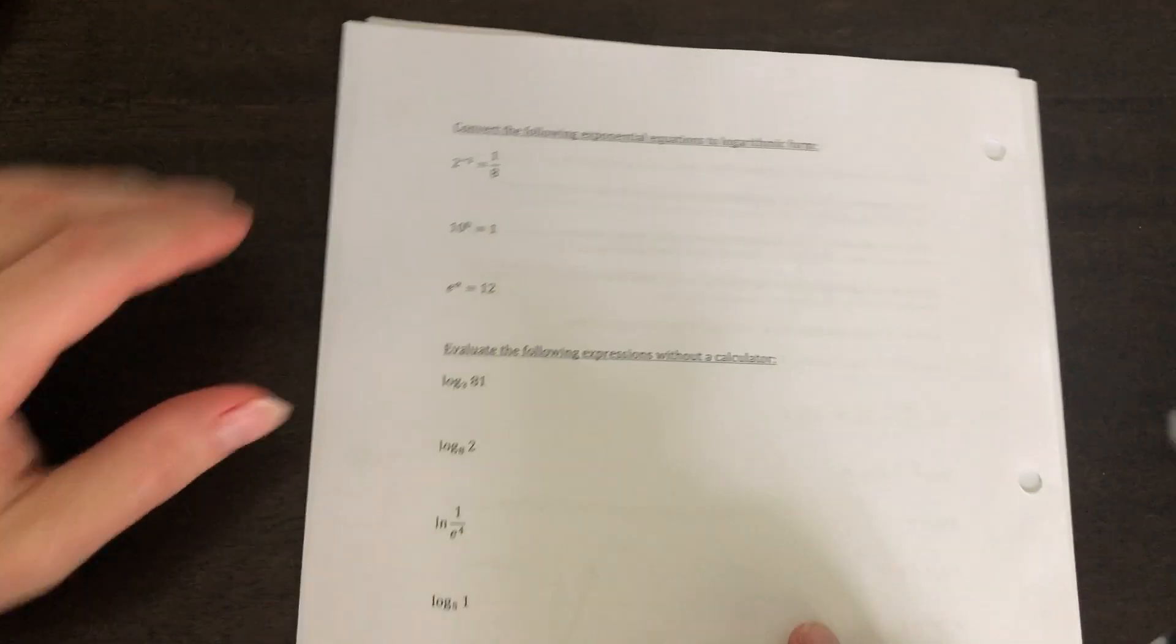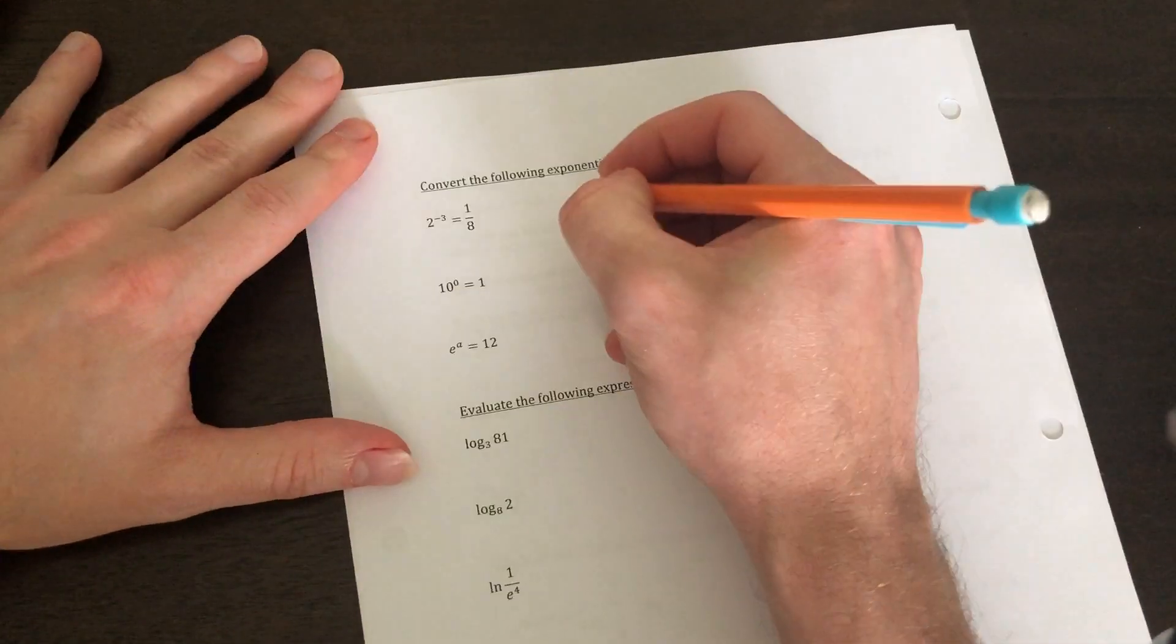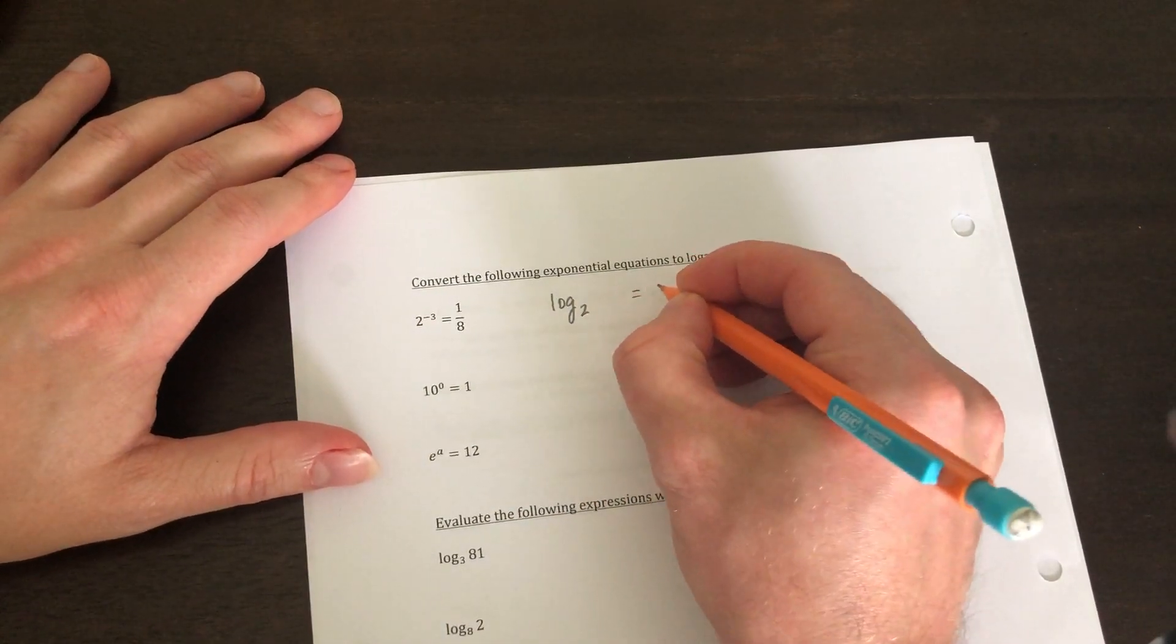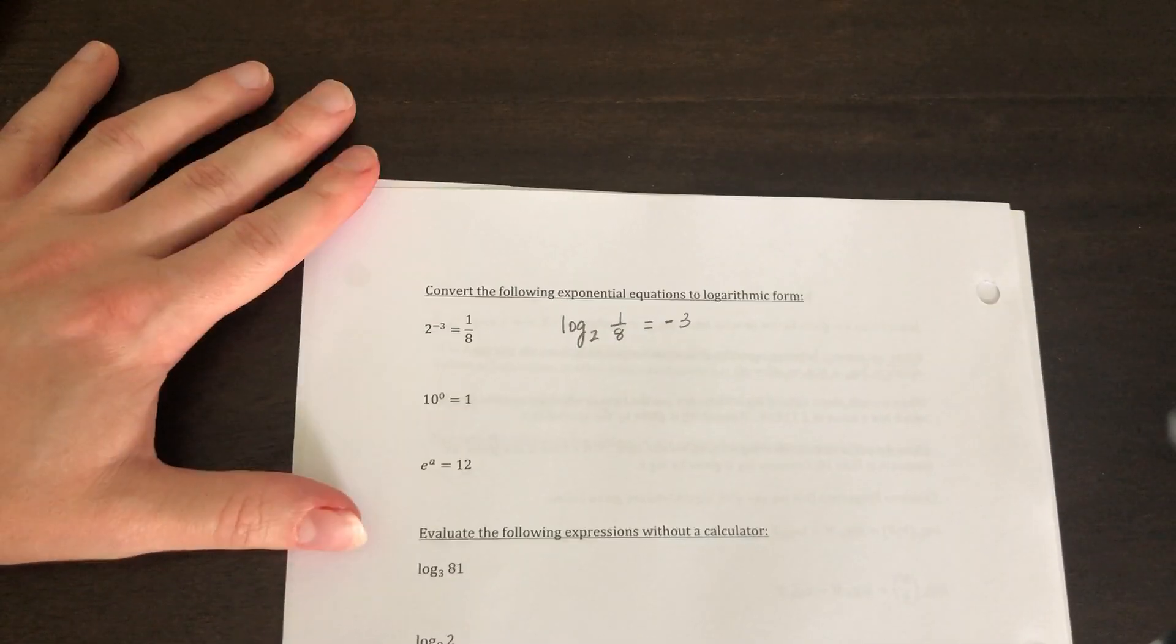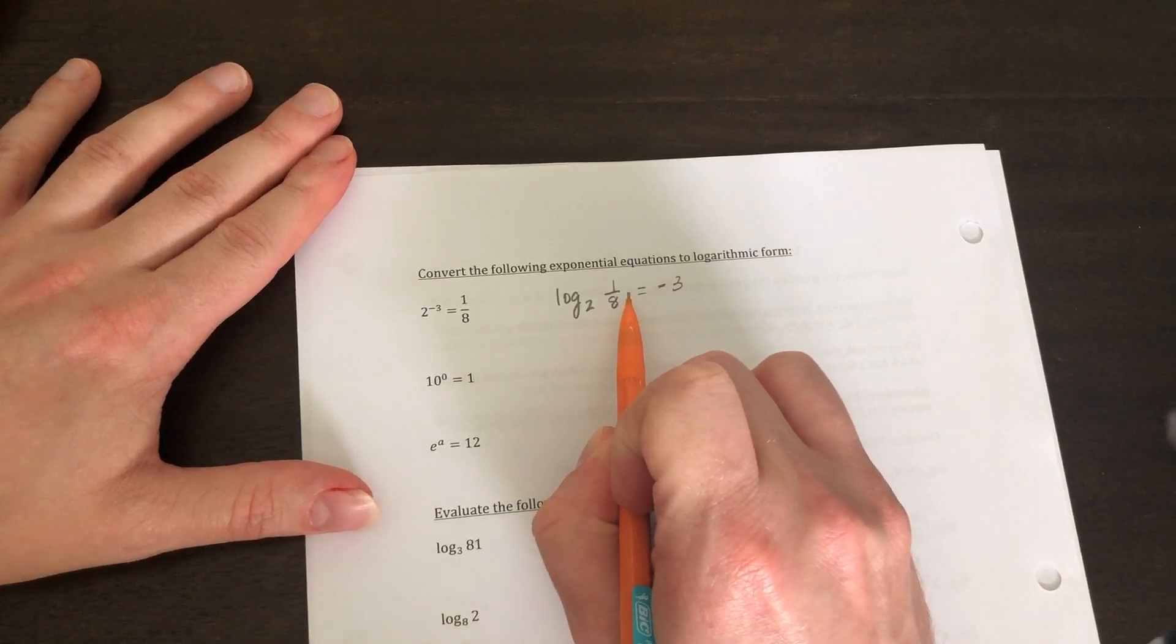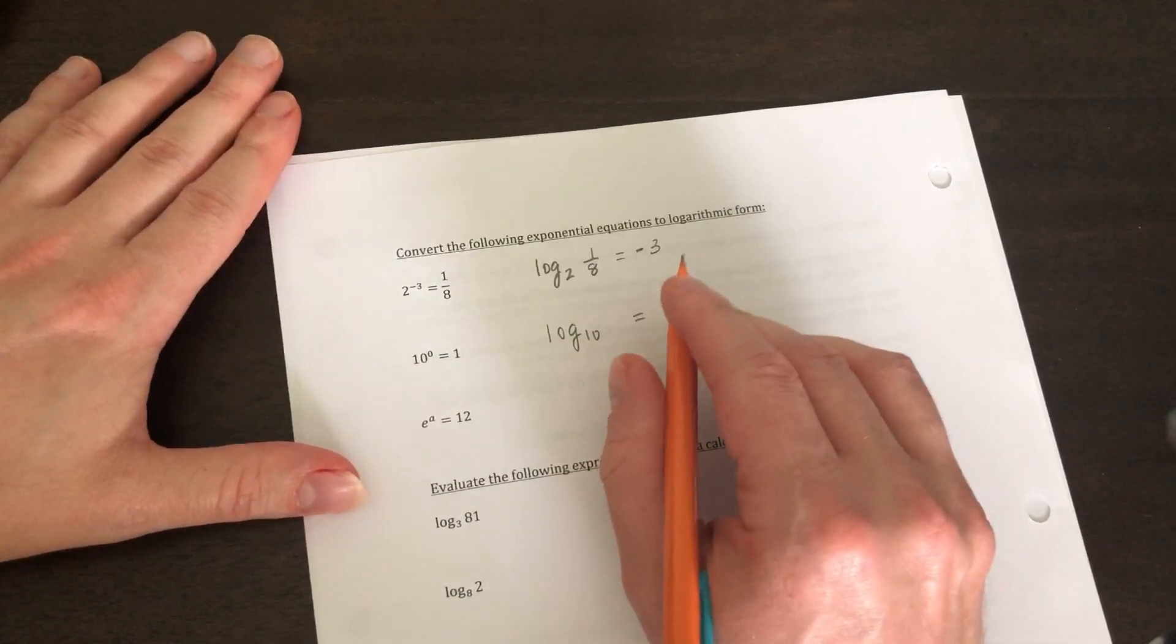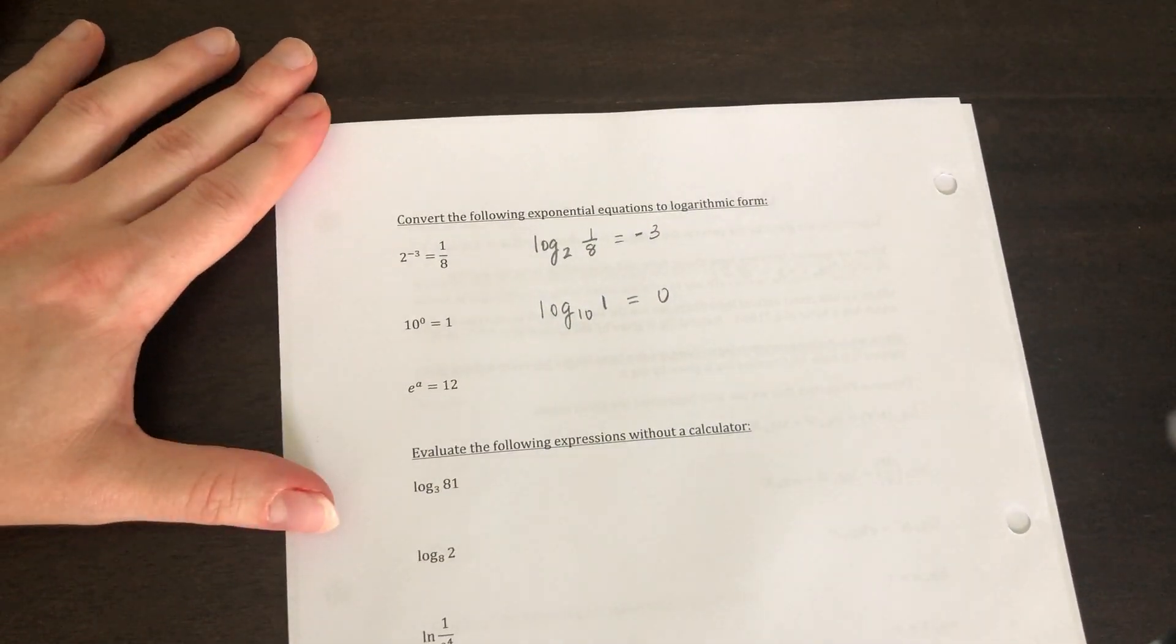Now the next one, we're going to convert the following exponential equations to logarithmic form. So what I like to do is I like to write my log in my base. So we'd say two to the negative three power goes over here is equal to one eighth. So I like to do it that way. And just so I can check myself, two to the negative third power is equal to one eighth. Base 10. 10 to the one power, 10 to the zero power is equal to one.